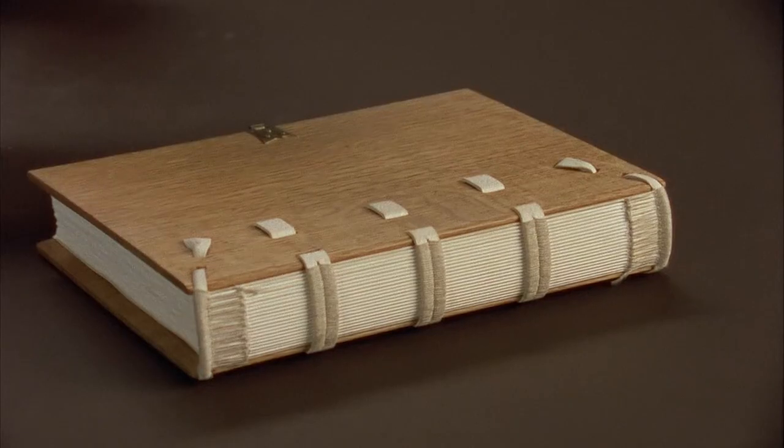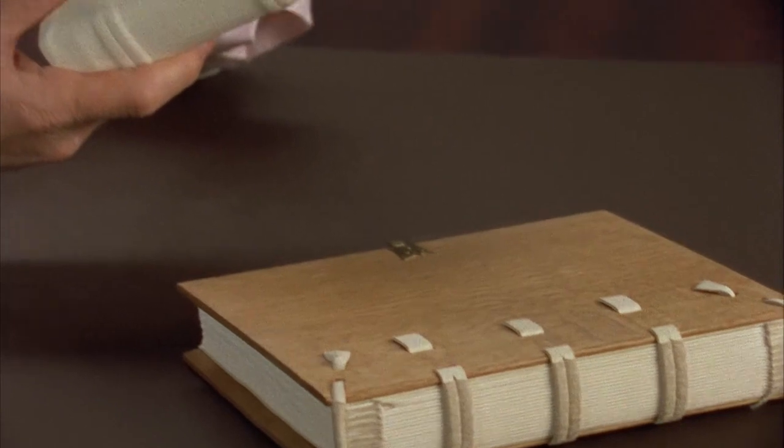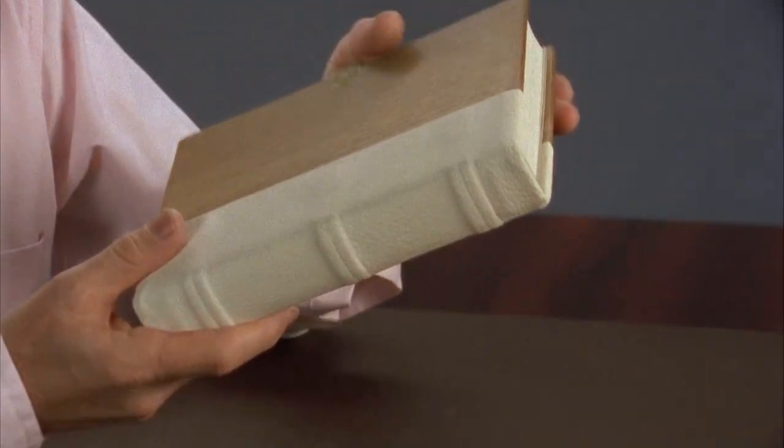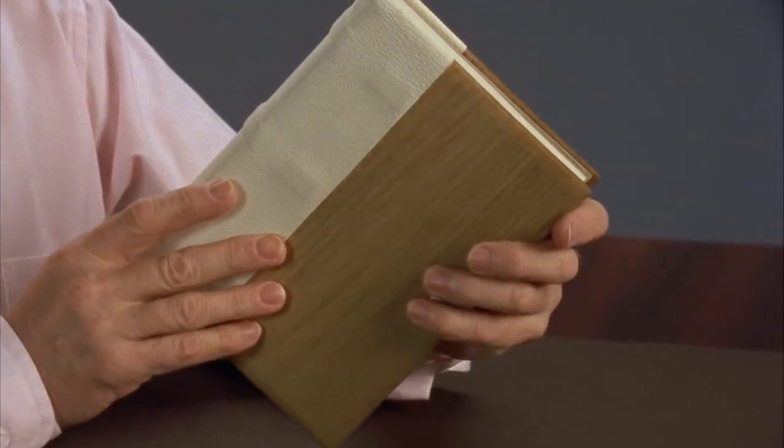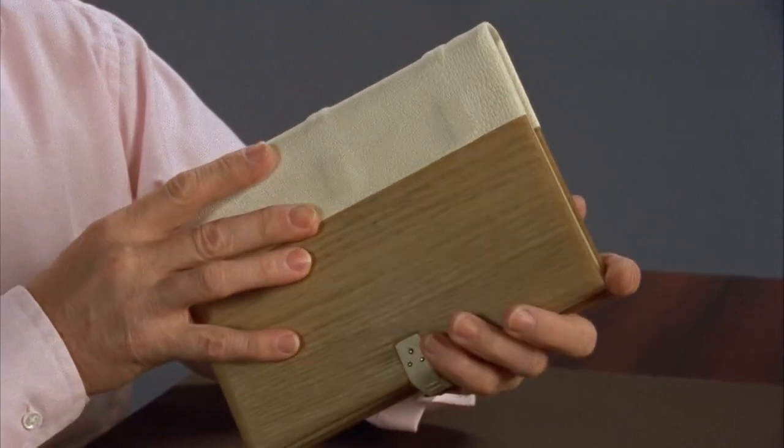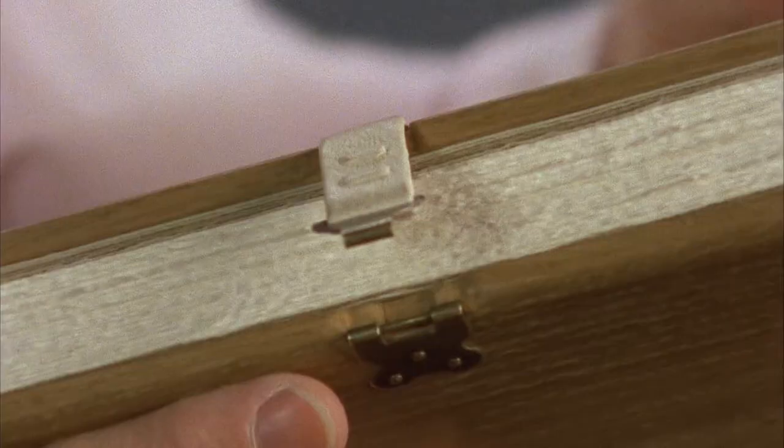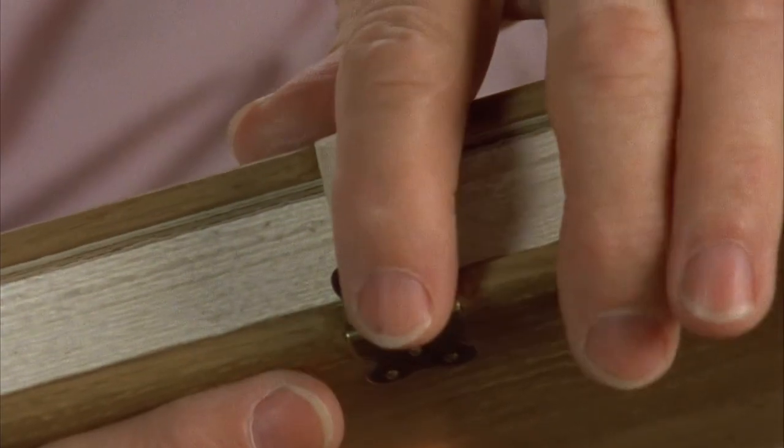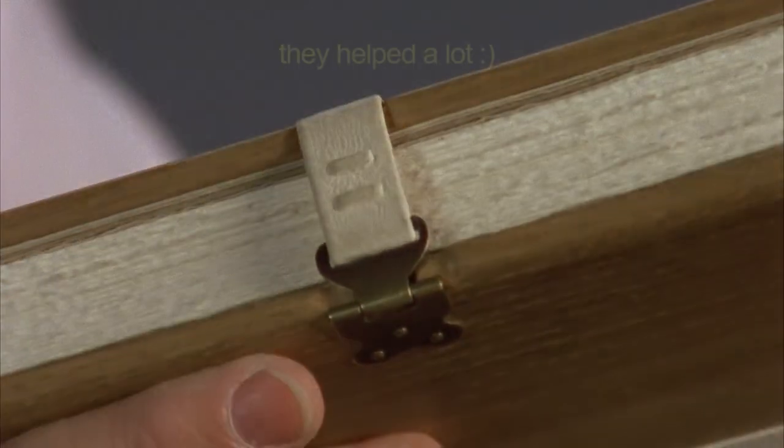The volume was then covered, usually with leather. Without pressure from the covers to keep the leaves flat, parchment expanded and contracted with changes in temperature and humidity. Pressure was applied by the addition of clasps, or straps, which held the book closed.